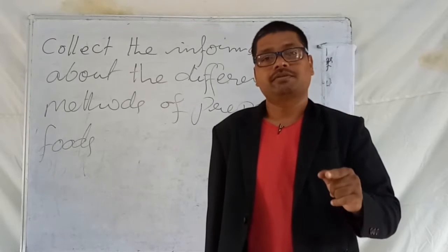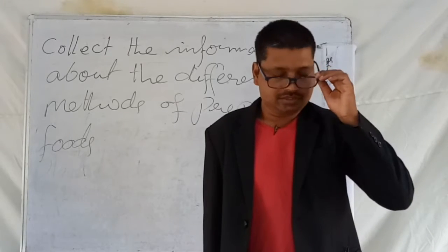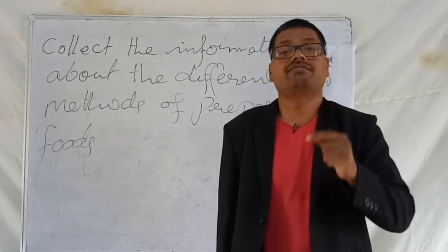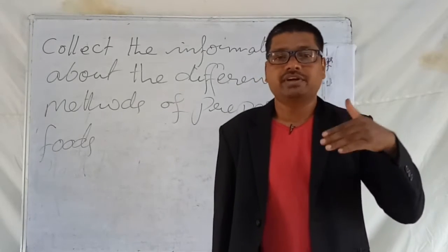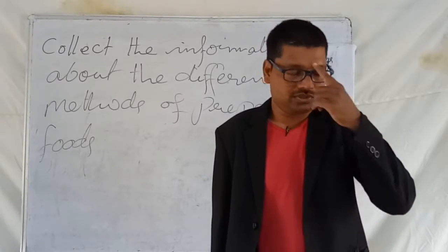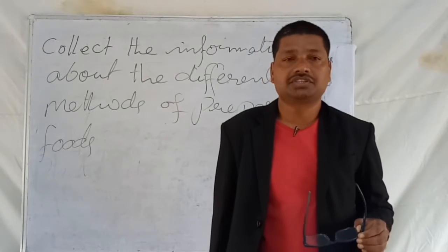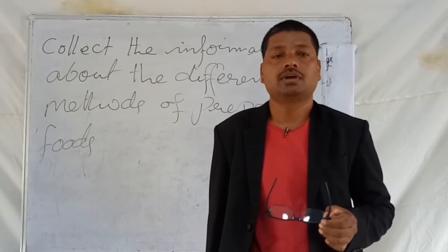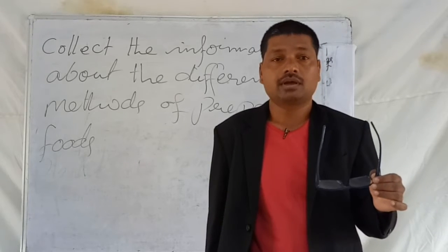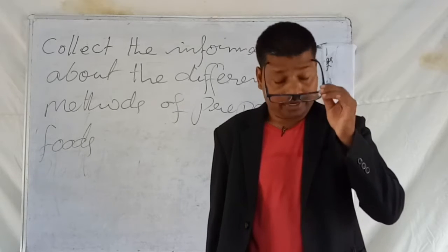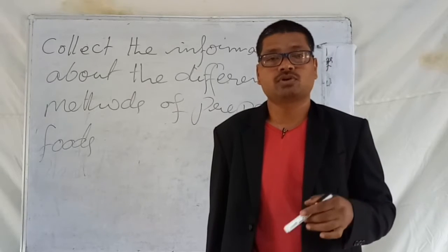I am giving you full information about this project. In this project, there are different methods we follow to cook different food items. Can you name some of the methods? Boiling, steaming, fermentation, roasting, deep frying, shallow frying, chopping and mixing, cutting and mixing. These are the main methods or processes we follow to cook different food items.